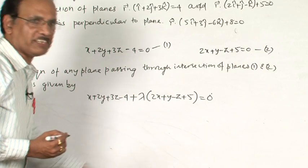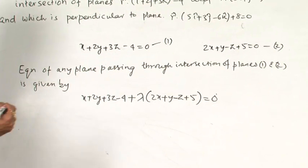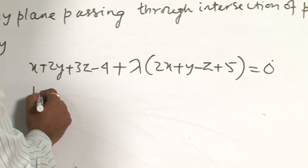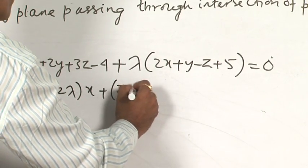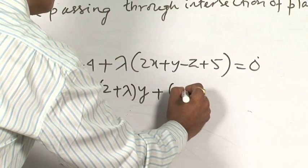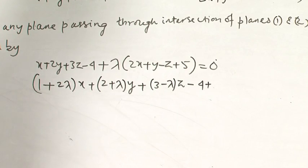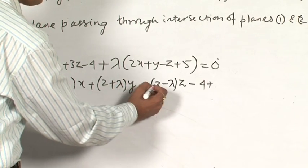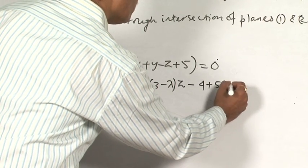Bringing this equation into the standard form ax + by + cz + d = 0 by combining like terms, this becomes: (1 + 2λ)x + (2 + λ)y + (3 - λ)z + (-4 + 5λ) = 0.